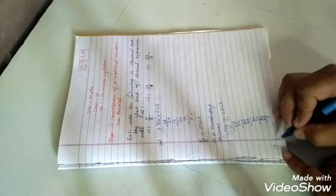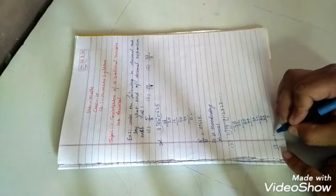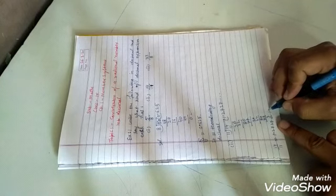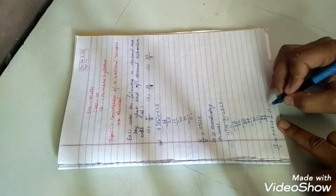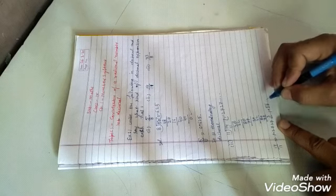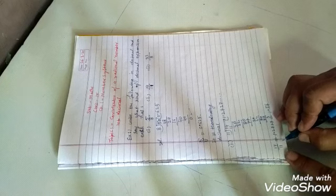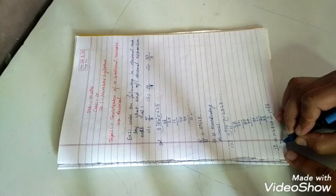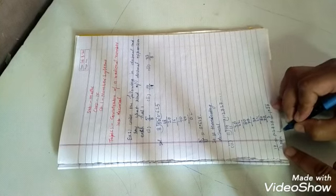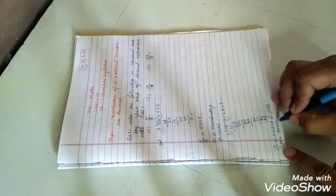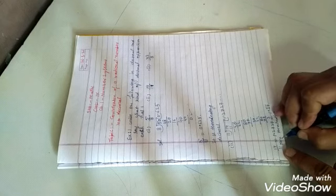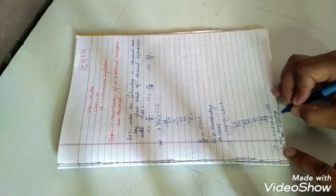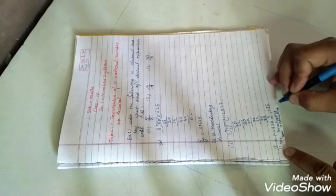So 14 upon 11 equals 1.2727... We can see 27 is the repeated value. The type of this decimal form is non-terminating repeating decimal.